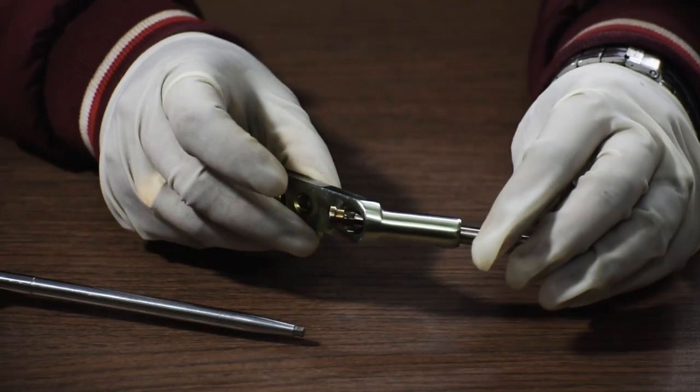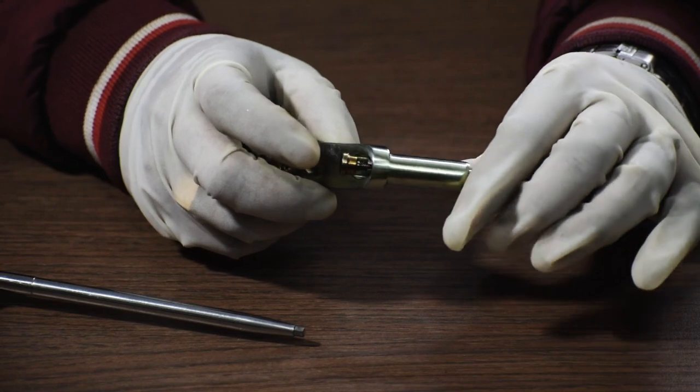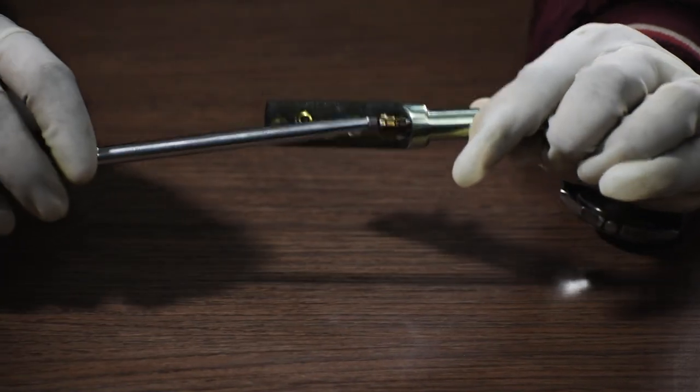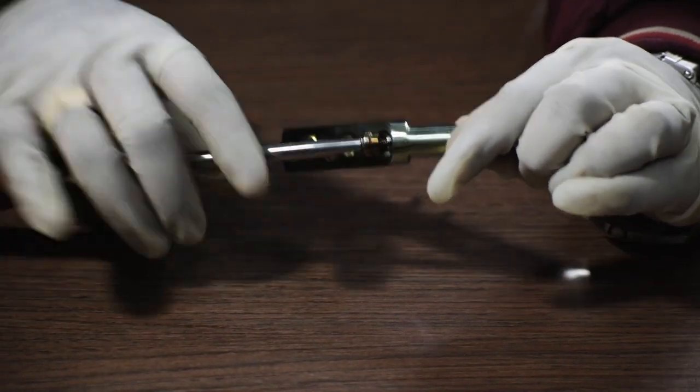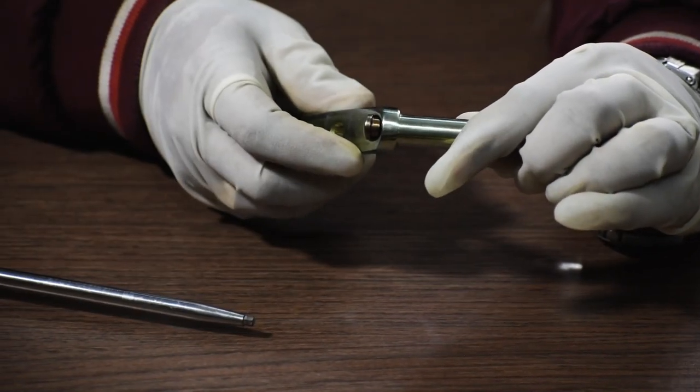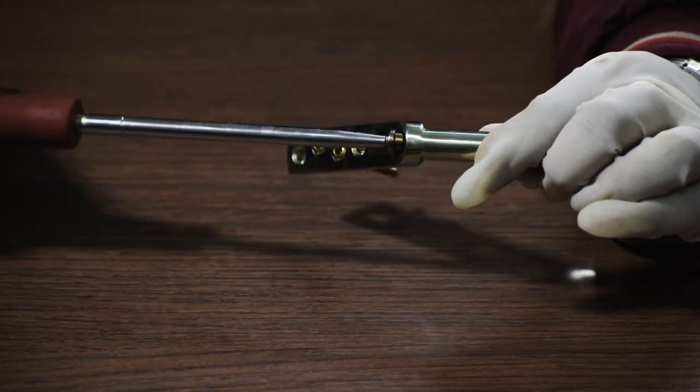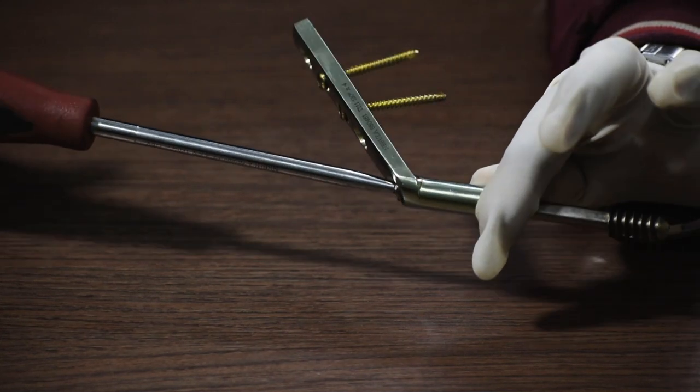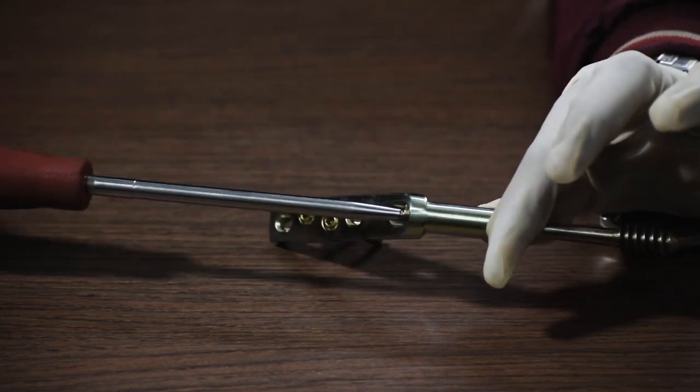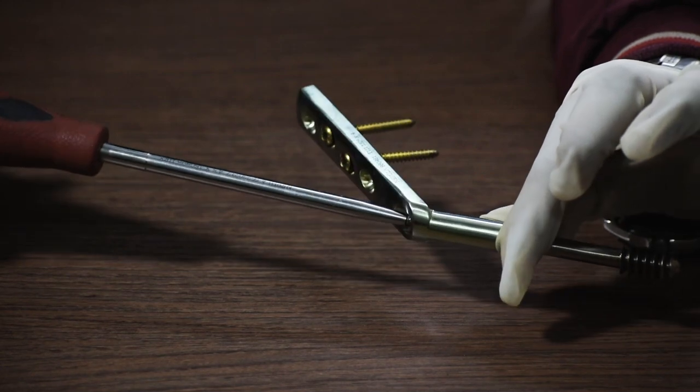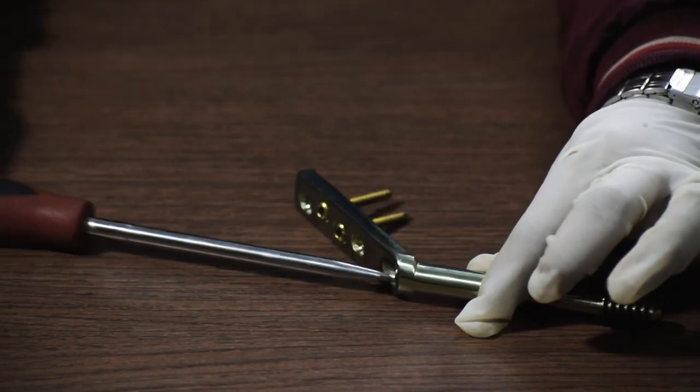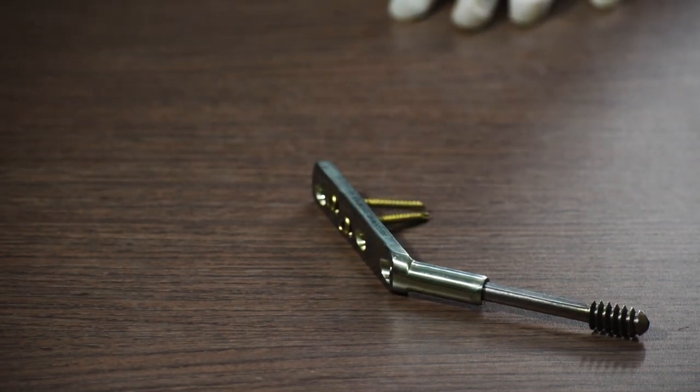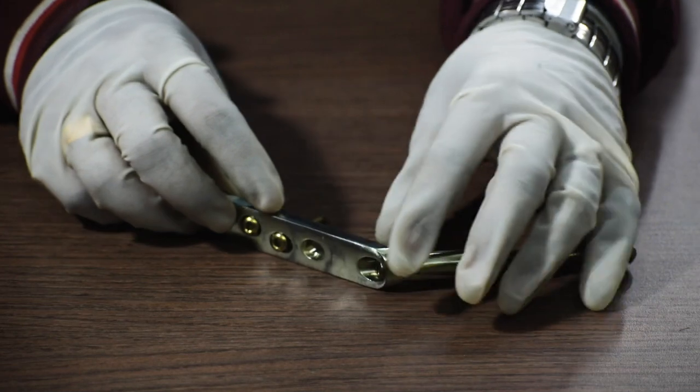If the screw length is such that it is popping out of this barrel of the DHS plate, the compression will be comparatively lesser from the one which just about covers the size of the barrel. This concludes the procedure of fixing a DHS plate.